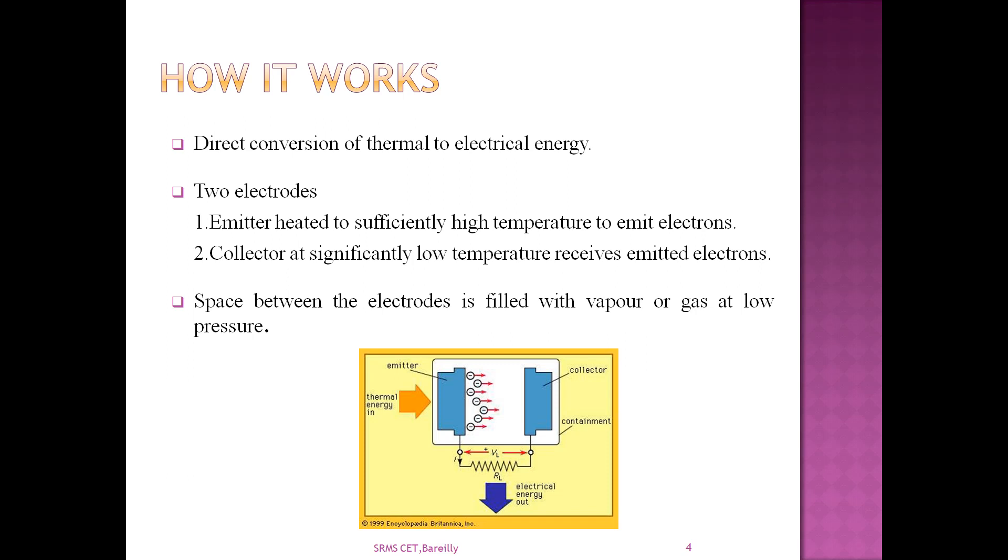Next we will study about its working, how it works. A thermionic power converter has two electrodes, as you can see in the diagram. One of these is raised to a sufficiently high temperature to become a thermionic electron emitter or hot plate. The other electrode, called a collector, receives the emitted electrons and is operated at a low temperature. The space between the electrodes is sometimes a vacuum but is filled with vapor or gas at low pressure. They can be designed for high reliability and long service life. Thus, thermionic converters have been used in many spacecrafts.